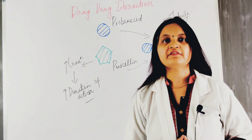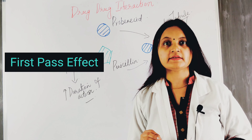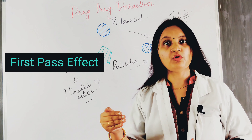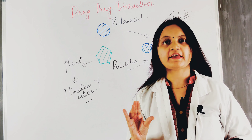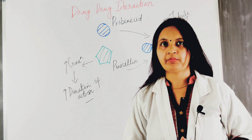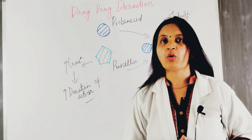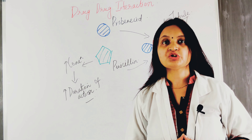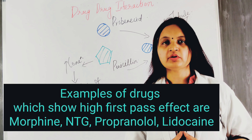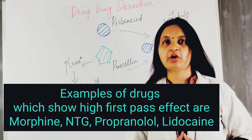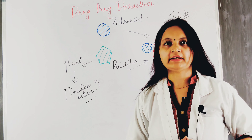The next factor is the first pass effect. Certain drugs undergo significant metabolism in the liver and intestine before reaching the systemic circulation. This is known as the first pass effect or pre-systemic metabolism. These drugs have reduced bioavailability when given through the oral route. Drugs which show high first pass metabolism include morphine, nitroglycerine, lidocaine, propranolol, and others.